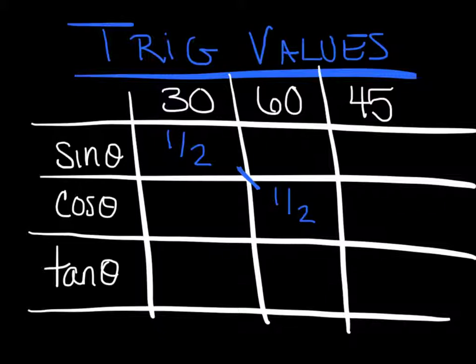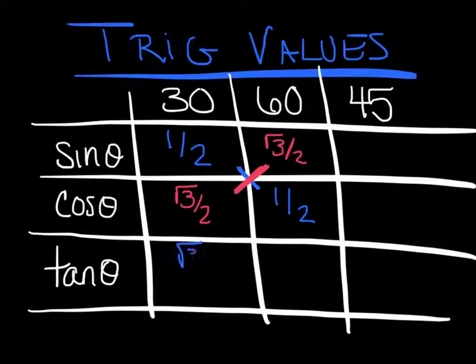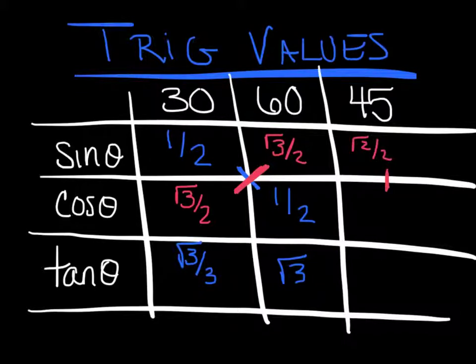Sine of 60 is radical 3 over 2, and so is the cosine of 30, radical 3 over 2. You'll notice that they're across from each other. They have that same angle. Tangent is fairly simple to remember. Tangent of 30, I like to say, has all the 3s. Tangent of 30 is radical 3 over 3. 30 has all the 3s. Tangent of 60 is just the numerator, radical 3. The sine and cosine of 45 are the exact same. They are radical 2 over 2. And then the tangent of 45 is 1.